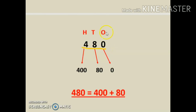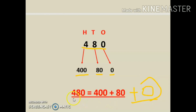One more example: the number is four hundred eighty. I write ones, tens, and hundreds on top. Place value of zero is zero, place value of eight is eighty, place value of four is four hundred. So four hundred eighty equals four hundred plus eighty. You may write plus zero at the end — it is also correct — but since zero has no value, we can omit it.